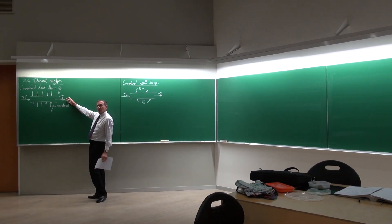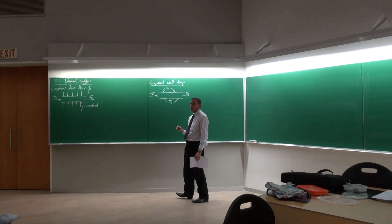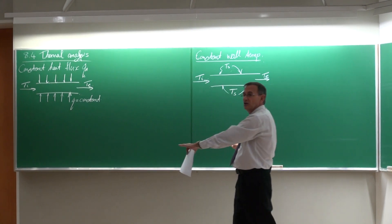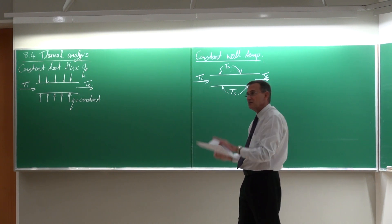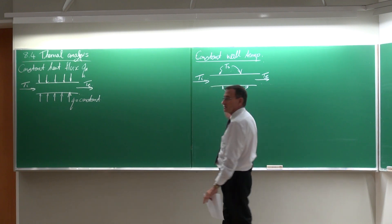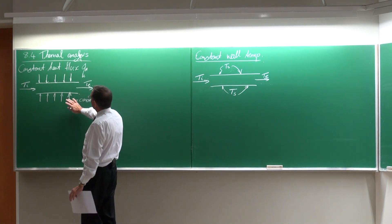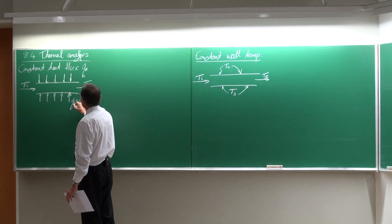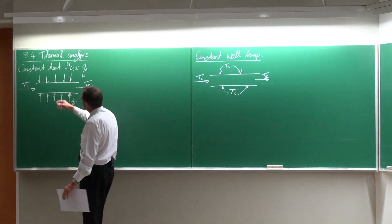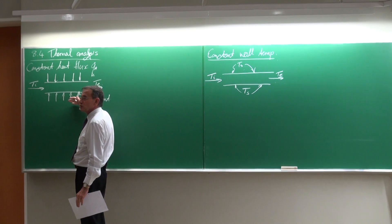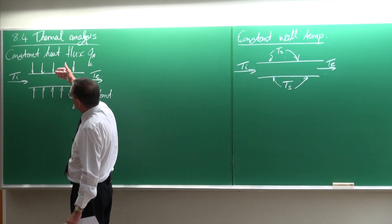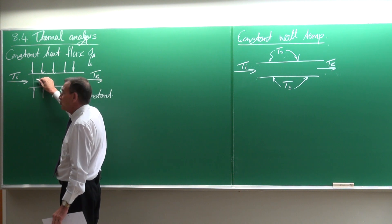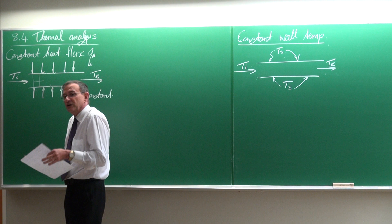It can either be a constant heat flux problem, or it can be a constant wall temperature problem. With the previous lecture, I asked you to divide your page in two so that you can see these next to each other and see the differences. For constant heat flux, something like Q-dot equals constant — this can be, for example, an electrical resistance element on the outside, or dual heating, or from a nuclear reaction. With this type of problem, the amount of heat for every millimeter the flow travels into the tube, it will receive the same amount of heat.